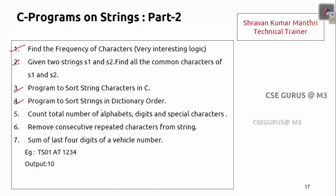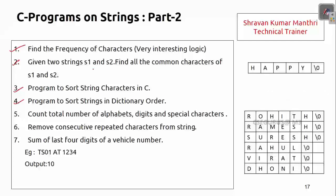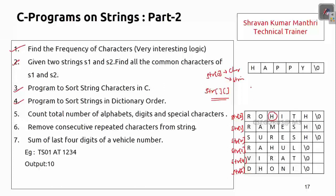Now for program four: sorting strings in dictionary order. Given a set of strings — not one string — I define them as a two-dimensional array. str[0] is one string, str[1] is another, up to six strings total. In a one-dimensional array str[0] is a single character, but in a two-dimensional array str[0] is an entire string. str[0][2] gives the character at row 0, column 2.